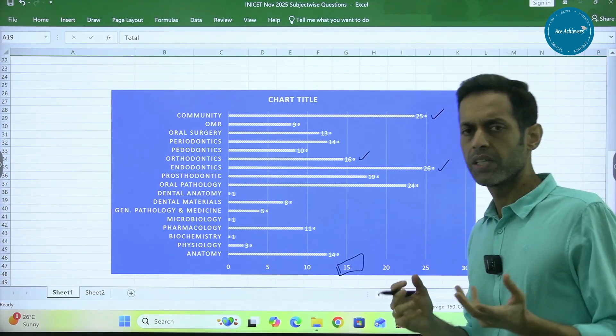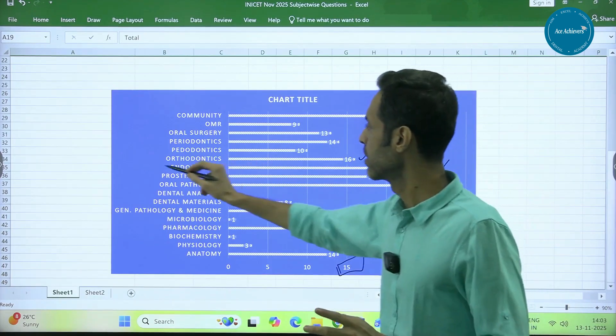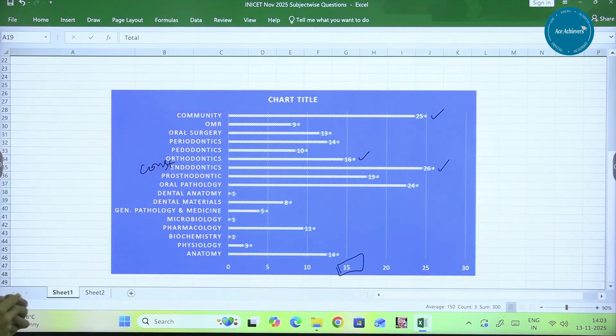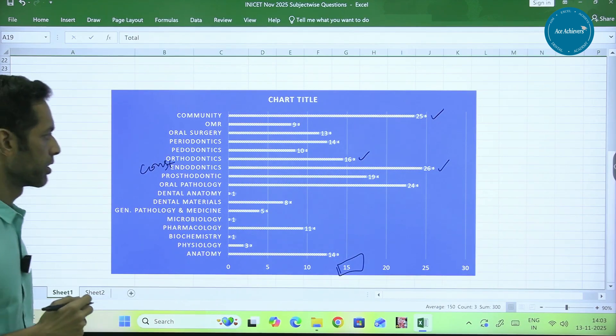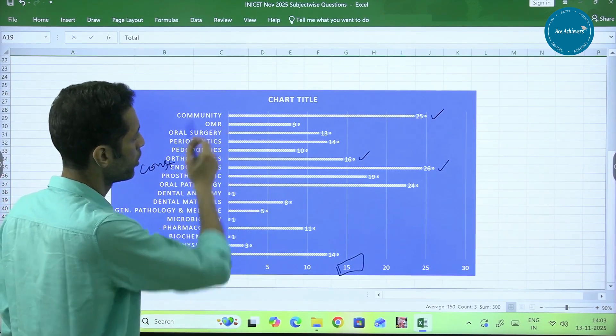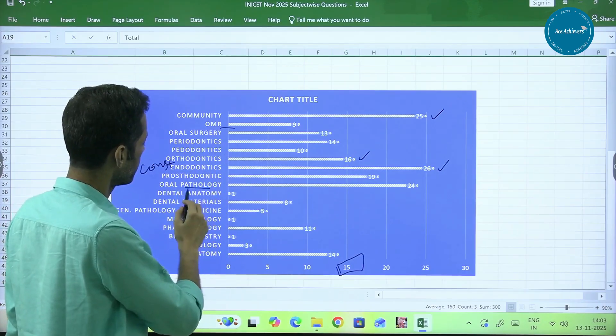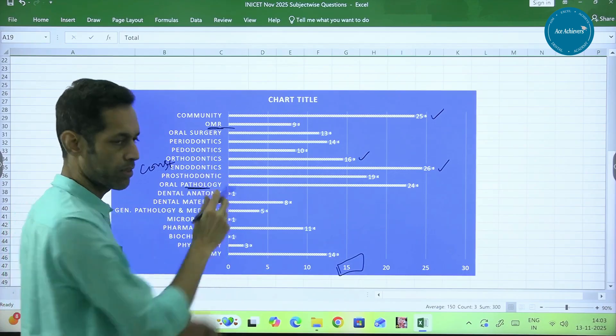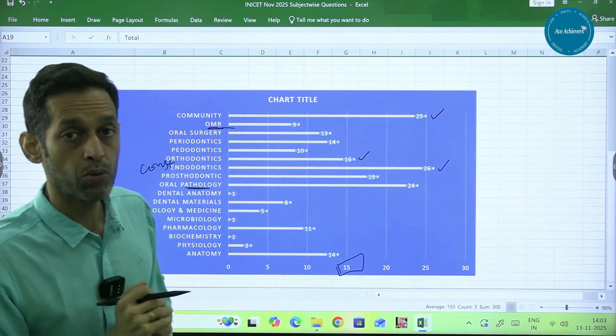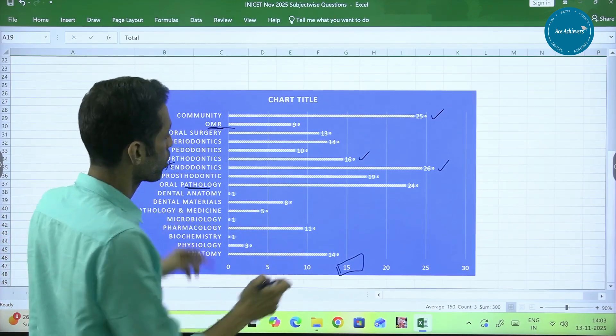Cons ki weightage thodi kami rethi hai. Endo is always more if we talk about both of them together. This is endo plus cons. So we read it as cons plus endo. But endo always has more weightage. So endo, surprisingly higher. Community as expected. OMR is always clubbed with oral pathology. It has an overlap with oral pathology. So I like to combine both of them when we are talking about OPATH and OMR. I like to combine them. Apart from that, Prosto is 19.